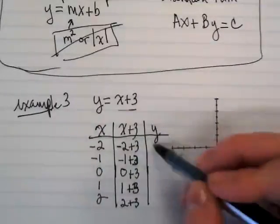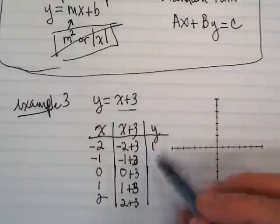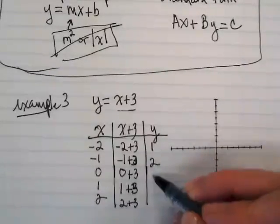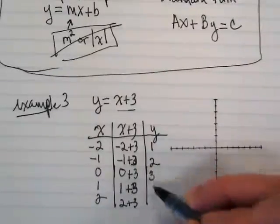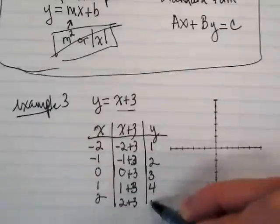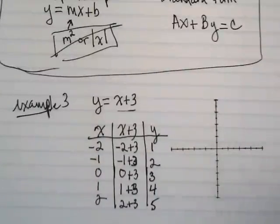Negative 2 plus 3 would be? 1. Negative 1 plus 3 would be? 2. 0 plus 3? 3. Then 4 and? 5.